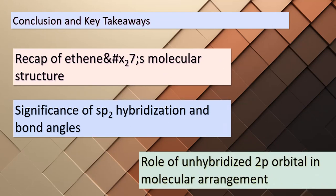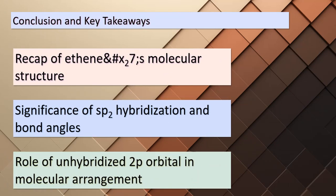As our journey comes to an end, let's reflect on the captivating world of ethene's molecular structure. We explored the significance of sp² hybridization, the intriguing bond angles, and the role of the unhybridized 2p orbital. These factors collectively influence the molecule's reactivity, stability, and properties. The concepts we've uncovered today are just a glimpse into the vast realm of chemistry. I encourage you to continue your exploration, as chemistry holds the keys to unraveling the mysteries of the natural world.